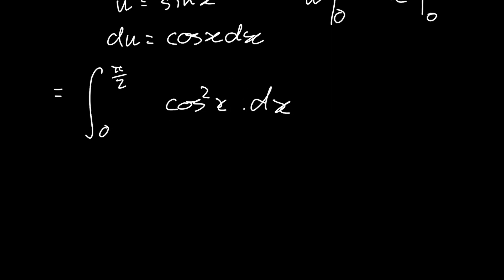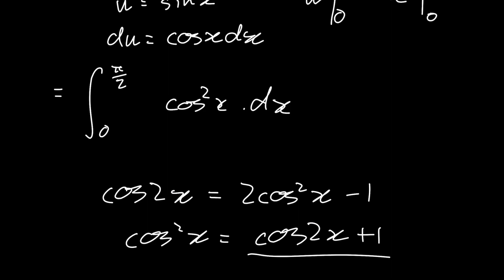So we use another trig identity. We know that cosine of 2x is equal to 2 cosine squared of x minus 1. So now I'm going to re-manipulate so we can have this in terms of cosine squared of x. So we have cosine squared of x equals cosine of 2x plus 1 divided by 2. So we took that 1 across and then we divide it by 2.